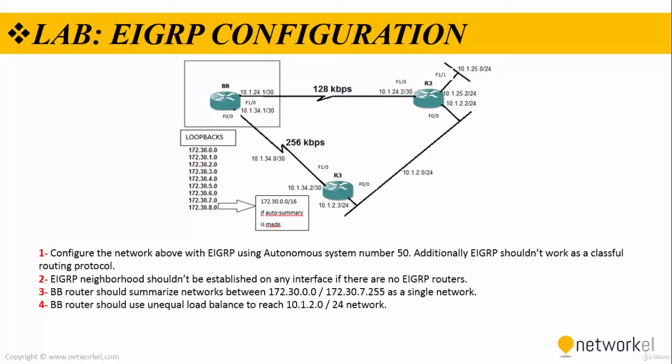Hello everybody, let's go with the lab. We are gonna take a look at EIGRP configuration on GNS3 together. We have 4 steps to accomplish. In the first step, we need to configure the network above with EIGRP using Autonomous System number 50.